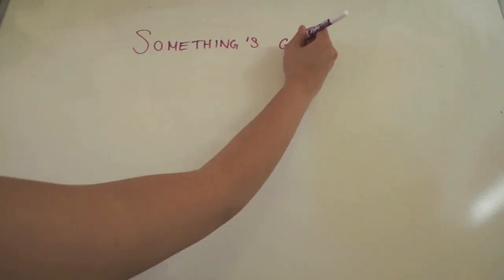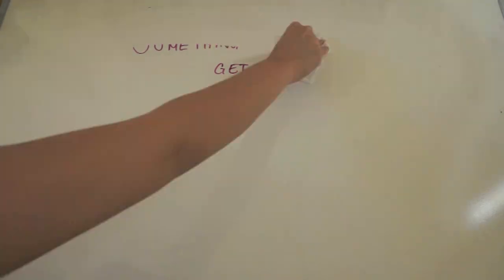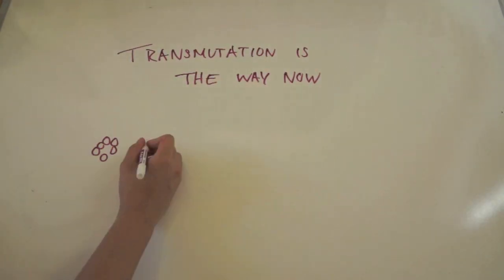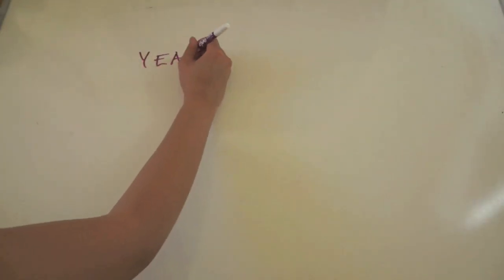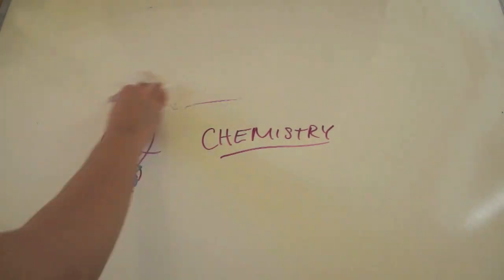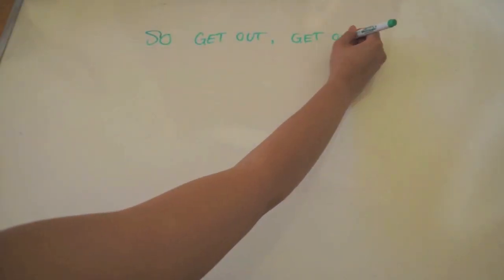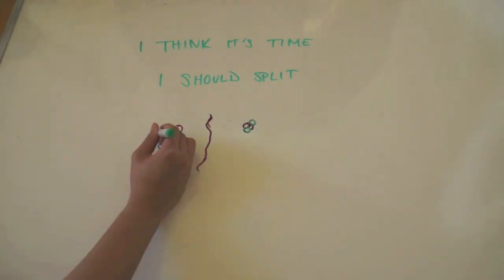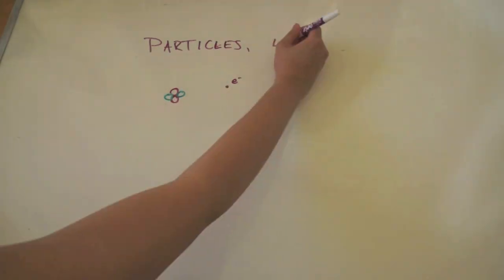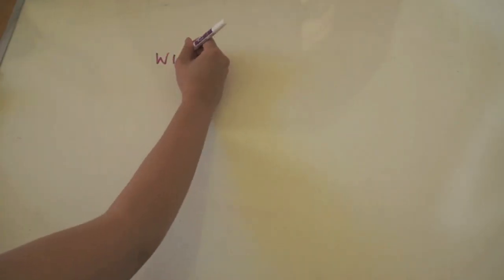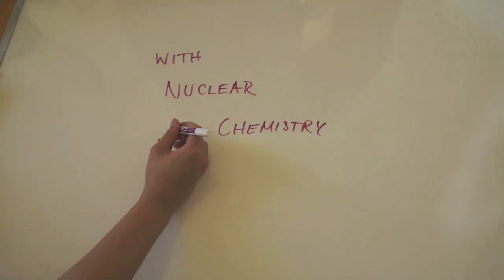Something's gotta get out, cause I'm hating this unstable state. Transmutation is the way now, get nuclear chemistry. So get out, get out of my nucleus, I think it's time I should split. Particles, energy, whatever it is, I'll change and set them free through nuclear chemistry.